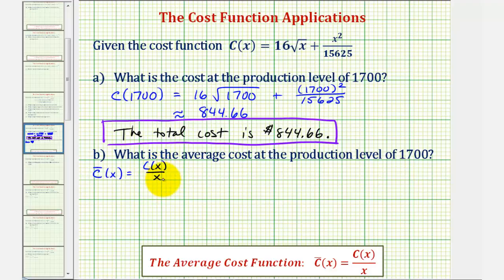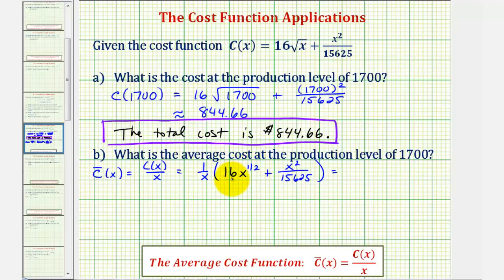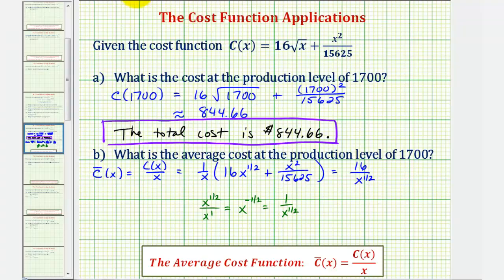Instead of dividing by x, we will multiply by 1 over x instead, which is equivalent. So we'd have 1 over x times the total cost function, which is 16x to the 1/2 plus x squared divided by 15,625. The first product gives us 16 divided by x to the 1/2, since x to the 1/2 in the numerator minus x to the first in the denominator gives x to the power of negative 1/2, leaving x to the 1/2 in the denominator.